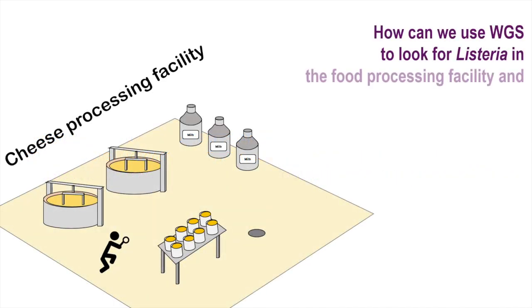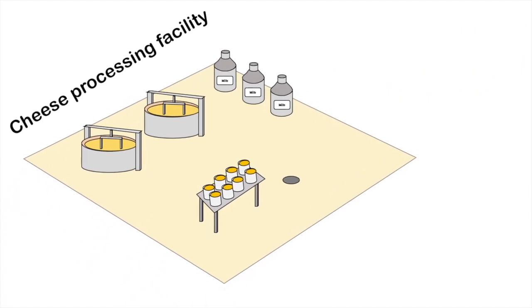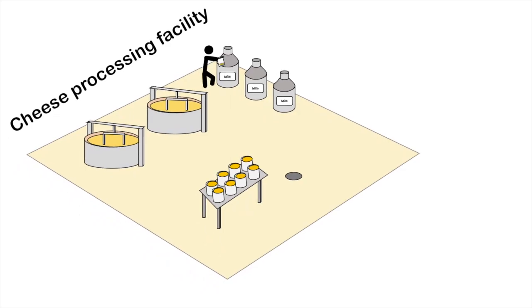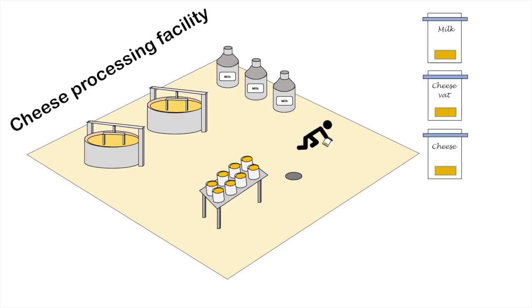How can we use whole genome sequencing to look for listeria in a food processing facility or ingredients, and if we find it, to relate it to the one found in our product? First, we need to collect samples of raw ingredients, food products, and swab different areas in the food processing facility. Collected samples are then sent to an external lab for testing.